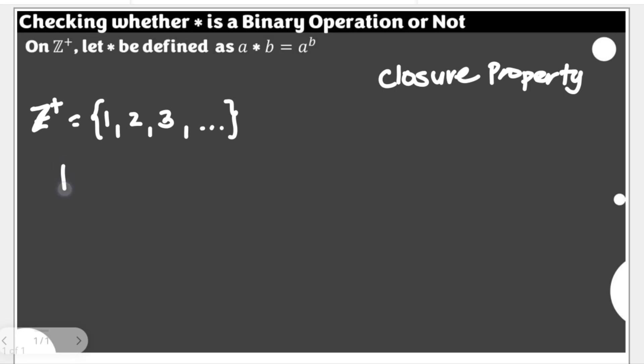Then if we are going to consider the star given here, being the operation defined as a star b equals a to the power of b, if all results of this would fall on the same set, then we have established the closure property and we can say that the operation is binary. Of course, the smallest possible value that we could use here is 1 star 1, which will give us 1 to the power of 1 because 1 is a and 1 is b, which will give us 1. And this is still an element of Z+.